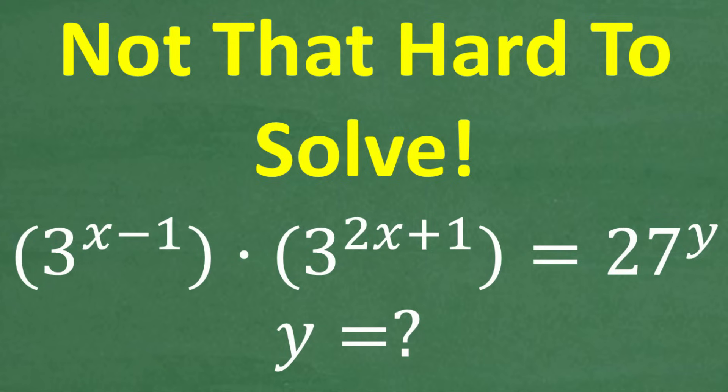If 3 to the x minus 1 times 3 to the 2x plus 1 is equal to 27 to the y power, then what is y equal to? This seems like a complicated problem, but actually it's not that difficult. If you can figure this out, go ahead and put your answer in the comment section, and then I'm going to walk through this problem step by step.